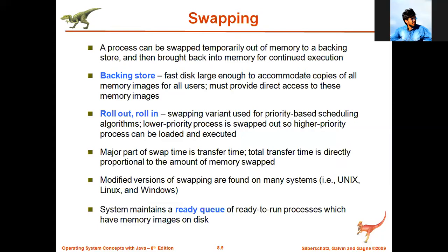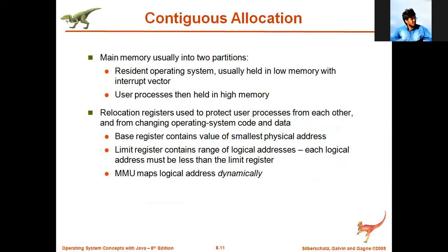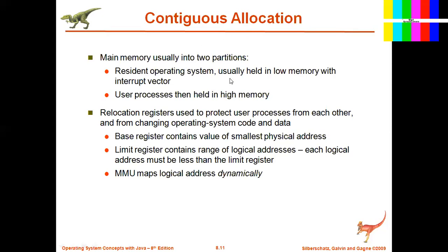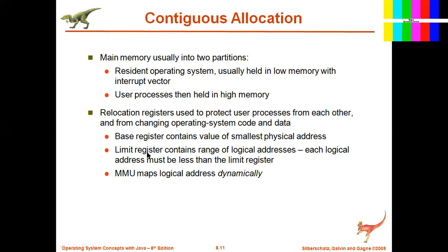The next important topic from an exam perspective is contiguous memory allocation — usually he will ask a problem for two to three marks or maximum four marks. In contiguous memory allocation, all memory is allocated continuously, one after the other. Random allocation is not done. The operating system sits in the first memory location and the remaining memory locations are occupied by user processes.